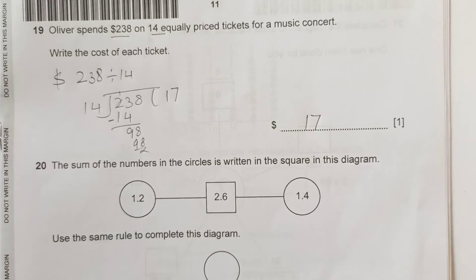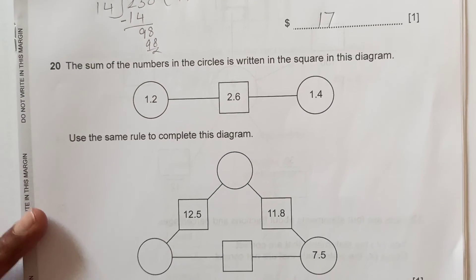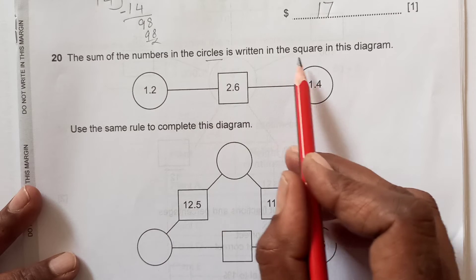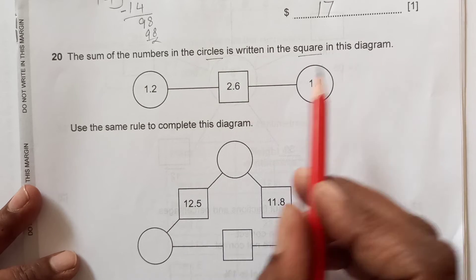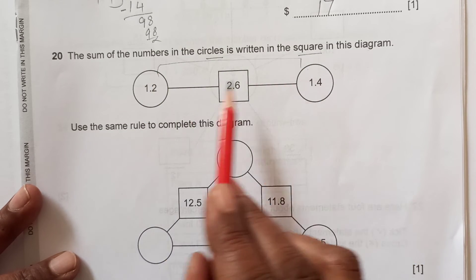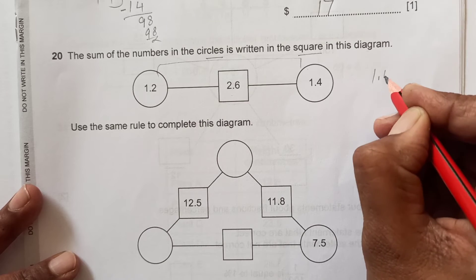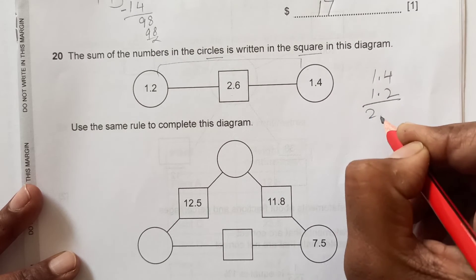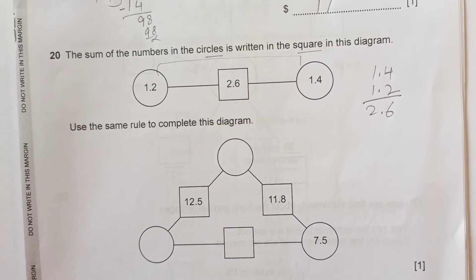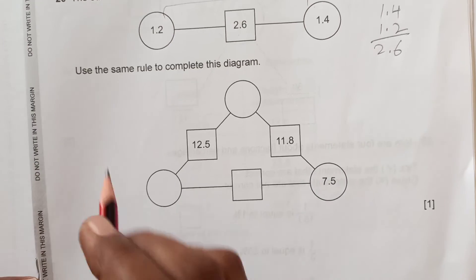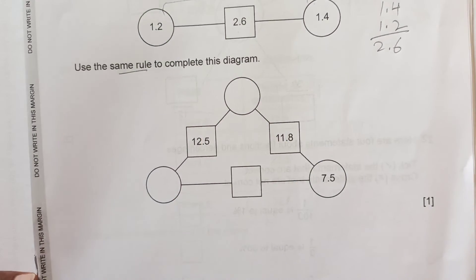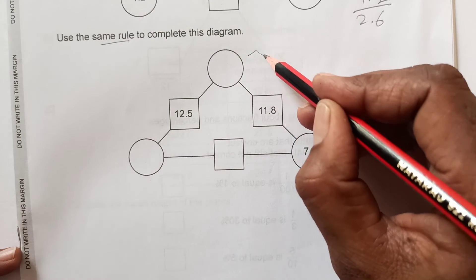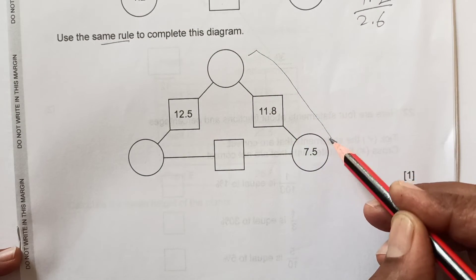Question 20. The sum of the numbers in the circles is written in the square in the diagram. For example, 1.4 plus 1.2 equals 2.6, which is written in the square. Use the same rule to complete the diagram.